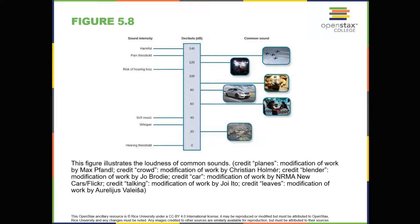As was the case with the visible spectrum, other species show differences in their audible ranges. For instance, chickens have a very limited audible range, from 125 to 2,000 hertz. Mice have an audible range from 1,000 to 91,000 hertz, and the beluga whale's audible range is from 1,000 to 123,000 hertz. Our pet dogs and cats have audible ranges of about 70,000 to 45,000 hertz and 45,000 to 64,000 hertz, respectively.